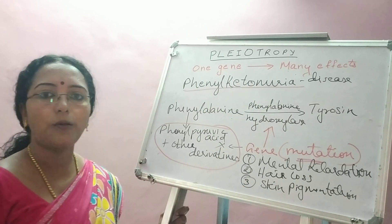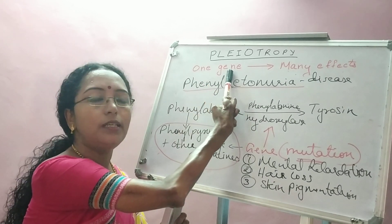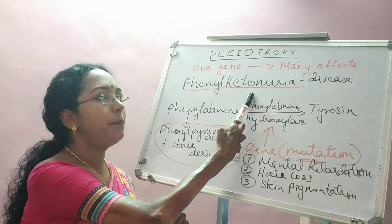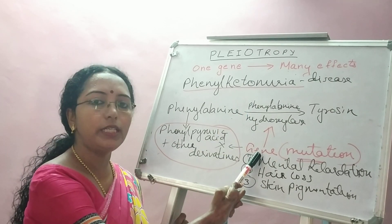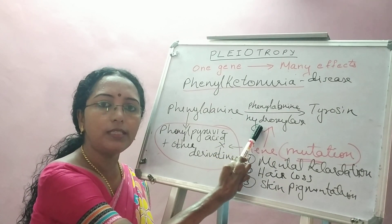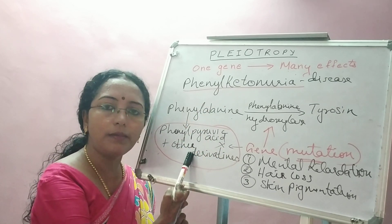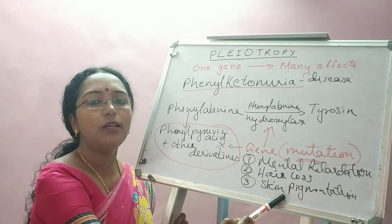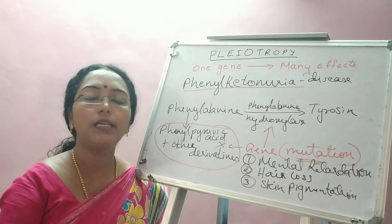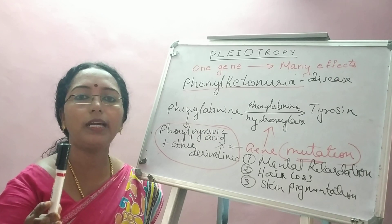So I hope pleiotropy is clear to you. Let's rewind: pleiotropy is the phenomenon of one gene producing many effects, and such genes are called pleiotropic genes. One classic example is the disease phenylketonuria, caused by the absence of a gene responsible for producing phenylalanine hydroxylase. Absence of this enzyme does not allow conversion of phenylalanine to tyrosine, leading to accumulation of products resulting in mental retardation, hair loss, and loss of skin pigmentation. In the next video, I'll come with many genes showing the same effect.